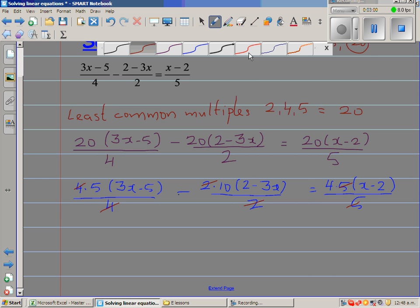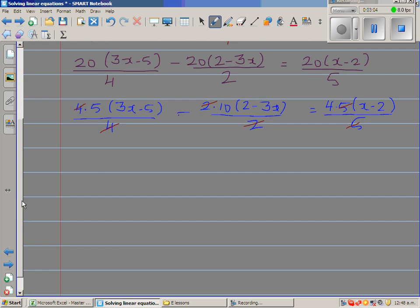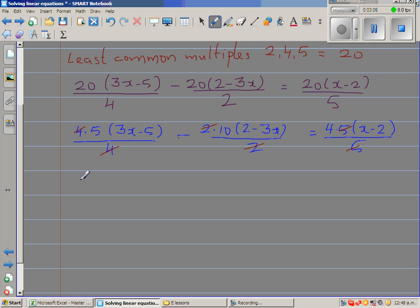What remains is you have eliminated the denominators. This becomes 5(3x - 5) - 10(2 - 3x) = 4(x - 2). This has become a simple linear equation.